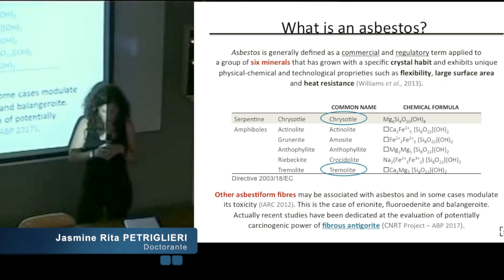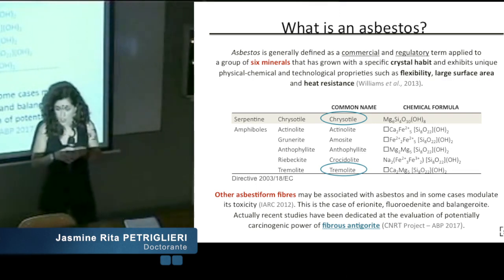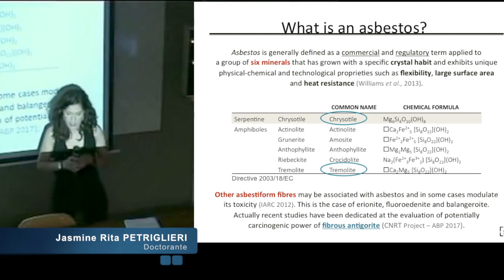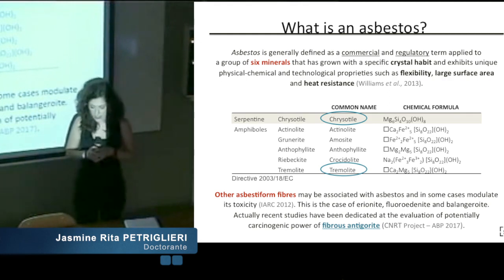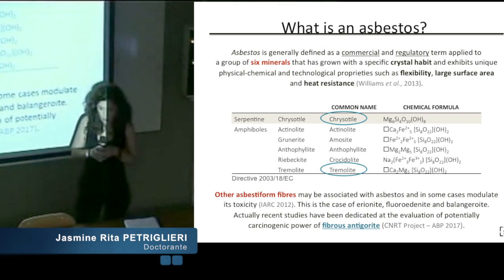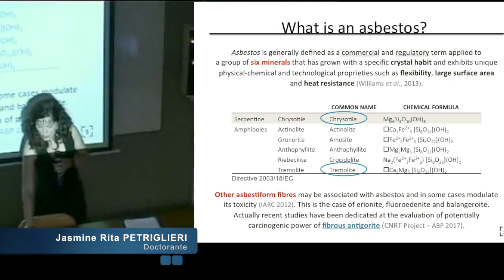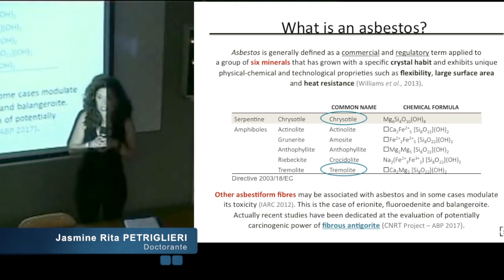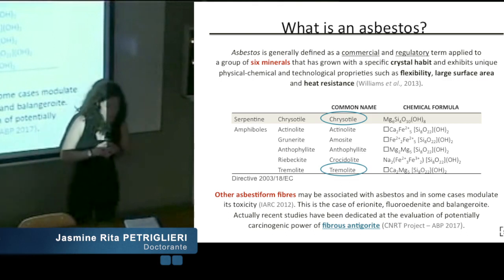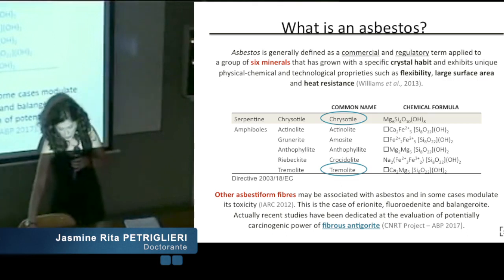Associated to these fibers there are other asbestos-like fibers that can modulate toxicity. This is the case, for example, of erionite and fluoro-edenite. Recent studies have been dedicated to the evaluation of the potentially carcinogenic power of fibrous antigorite. We focused our attention on the study of chrysotyl, tremolite and fibrous antigorite that are present in the geological units of New Caledonia.